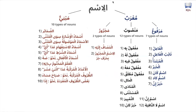So, al-ism — the noun in the Arabic language — can either be mabni or mu'rab. Mabni means that it will not accept an i'rab al-lafdi; it won't accept the articulated i'rab. There are ten different types of mabni nouns. Al-dama'ir — all pronouns are mabni. Al-ism al-ishara includes nouns like hadha, hadhihi, dhalika, and tilka.